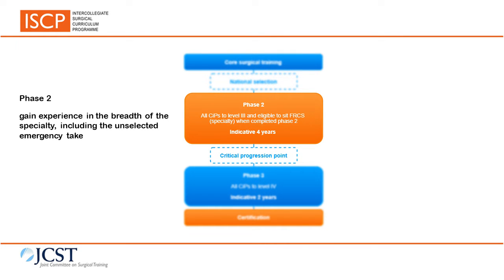The purpose of phase two is to gain experience in the breadth of the specialty, including the unselected emergency take. If the specialty curriculum describes special interests, there will be opportunities for early exposure to these to help trainees decide what special interests to pursue later in training. The knowledge, clinical and professional skills will be developed to that required of a day one consultant by the end of phase two, which will make those reaching the end of phase two eligible to apply to take the intercollegiate specialty exam in their specialty.